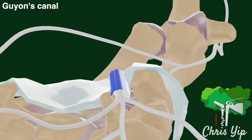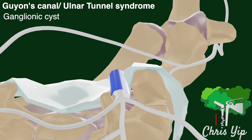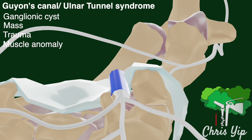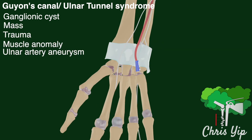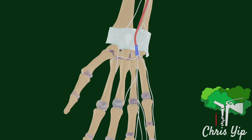A second important region for ulnar nerve palsies is at Guyon's Canal, which gives rise to Guyon's Canal syndrome or ulnar tunnel syndrome. Common causes of entrapment include a ganglionic cyst, a mass, trauma, muscle anomaly, or an ulnar artery aneurysm. The ulnar nerve divides in Guyon's Canal into its superficial and deep branches, so symptoms can be either sensory, motor, or both, depending on which fibres are being compressed.